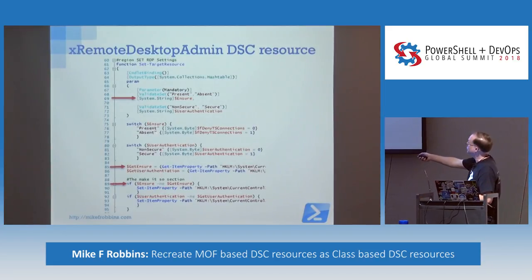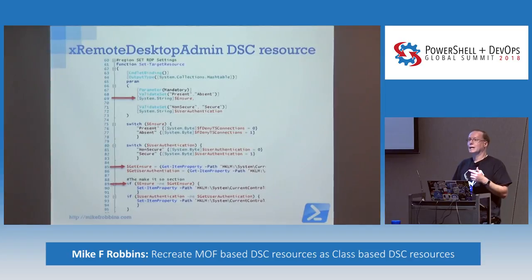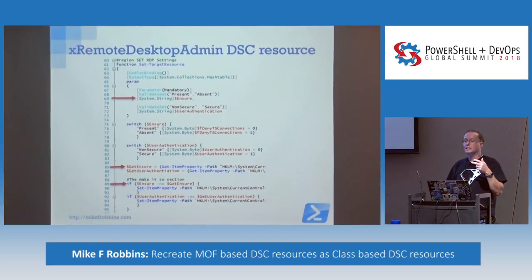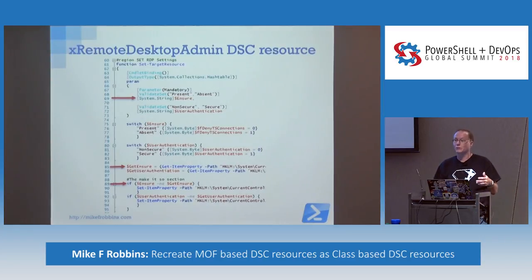They use user authentication, and then they use user authentication again. But they made a mistake — they used 'ensure' and this 'deny TS connections' here. So the problem is, once they get down to this if statement, they're comparing a string to a numeric value. So it's always true. If they designed this with an if statement, they would only set the one that was wrong. The way it's written, this one if statement is always going to run regardless. It doesn't hurt anything, and that's why nobody ever noticed it. But to me, it's just irritating to have code that doesn't work the way it was designed to work.